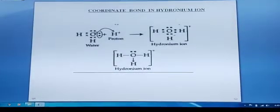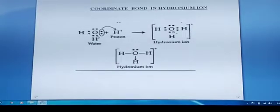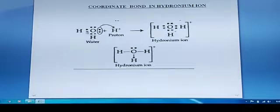Oxygen has achieved its octet: 1, 2, 3, 4, 5, 6, and 2 sharing with hydrogen. Electrons are being shared with hydrogen.